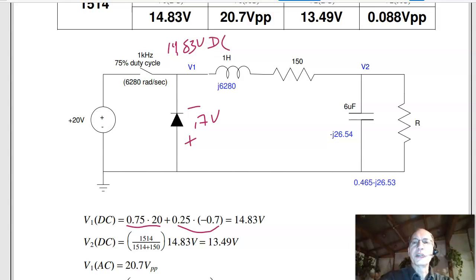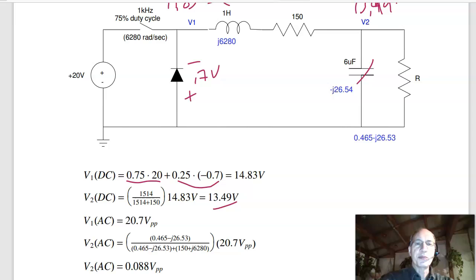By voltage division, capacitor doesn't matter DC, inductor doesn't matter DC, it's R over R plus 150, times 14.83, 13.49 volts. That's the DC. AC voltage. V1 goes from plus 20 to minus 0.7. The AC voltage then is 20.7 volts peak to peak.